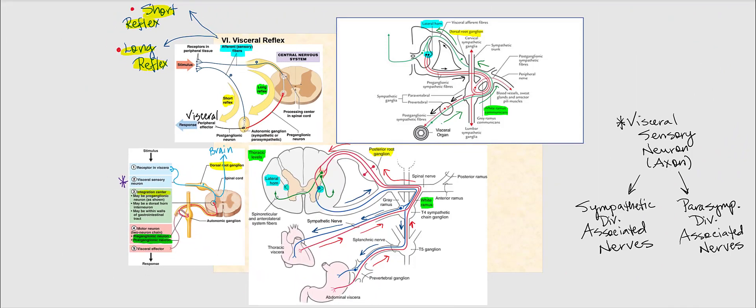We introduced the visceral reflex in the spinal cord chapter. Let's review the components of a visceral reflex. It begins with a visceral sensory neuron found in the visceral organs — compared to somatic sensory neurons for skeletal muscle, skin, or joints. The receptors or dendrites of these visceral sensory neurons are the actual sensory receptors. Structurally, this visceral sensory neuron is a unipolar neuron, with action potentials directed towards the spinal cord, and cell bodies located in the dorsal root ganglion.